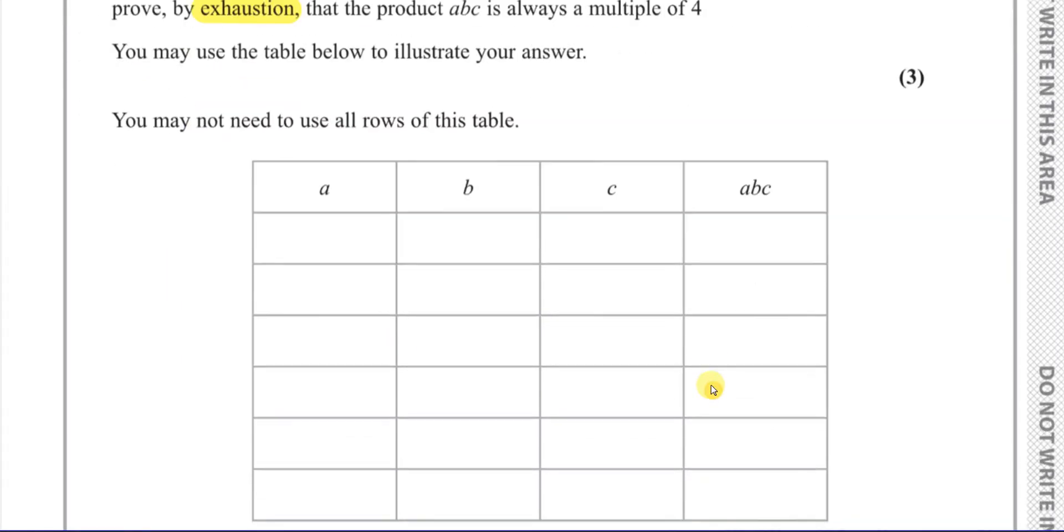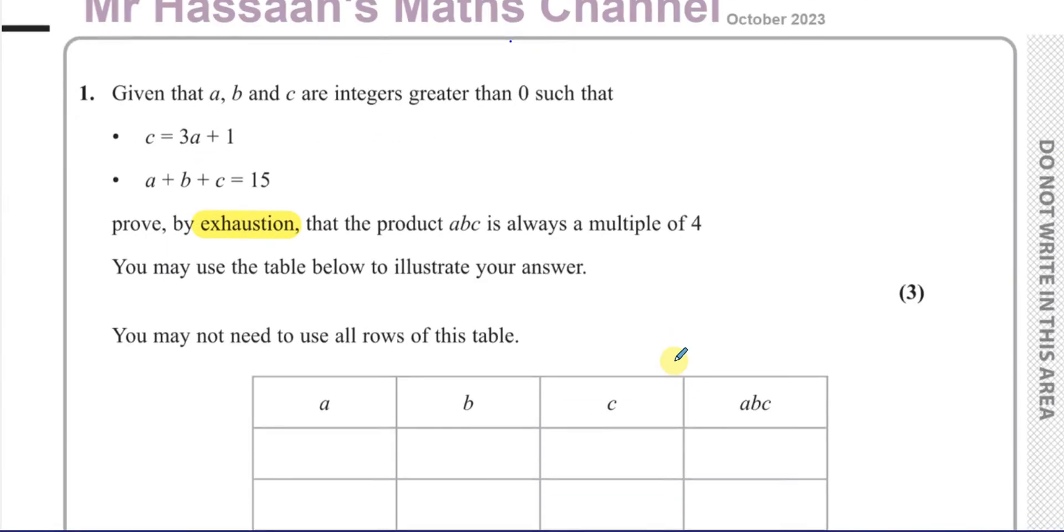So let's start off with the most obvious one. Let's say when A equals 1. Let's see when A equals 1, because it looks like A is going to be the smaller out of the other two numbers. So if A equals 1, then C is equal to 3 times 1 plus 1, which is going to be 3 plus 1, which is going to be 4. So C is going to be 4.